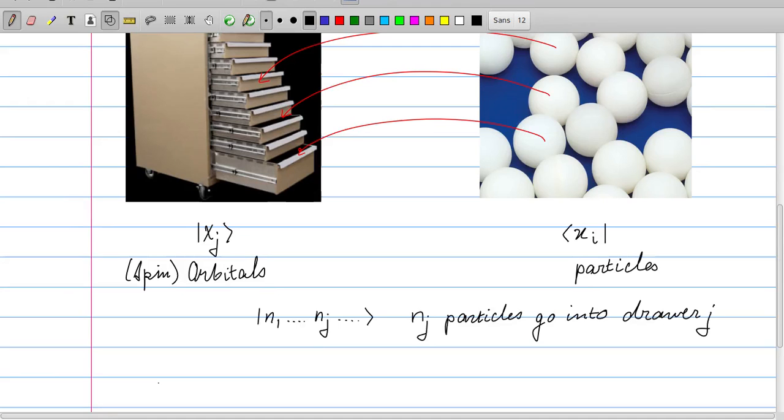To summarize, if we have this notation n1, nj, this means that nj particles go into drawer, the drawer should be read as a state, number j. The state is then chi j.